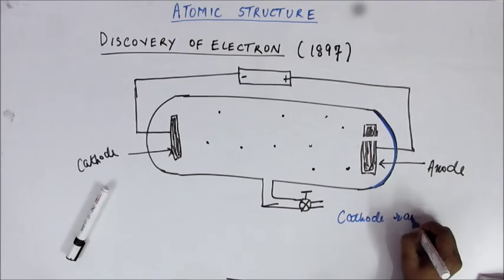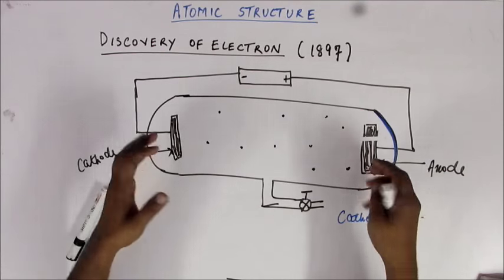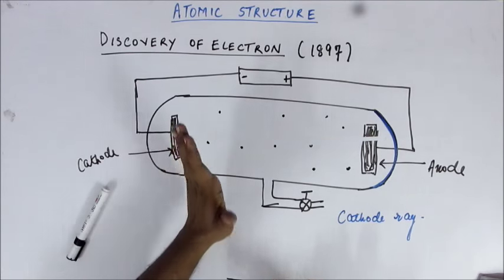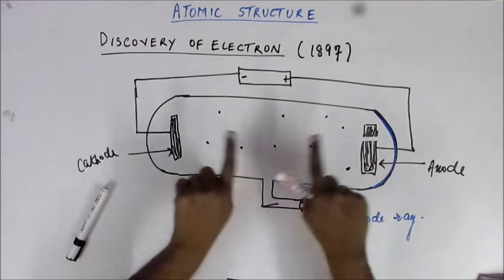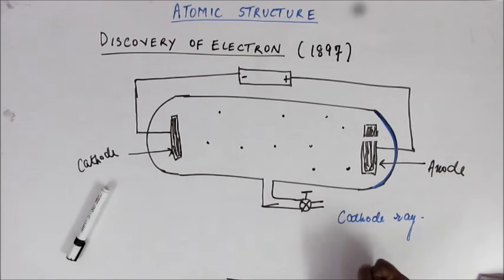So what we know up till now is: if we set up a huge potential difference between two plates, a radiation emanates from the cathode towards the anode, and that ray is called the cathode ray. But that is not sufficient — we have to know more. Whether this radiation has a charge, and if so, what kind of charge — positive, negative, or neutral.